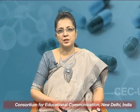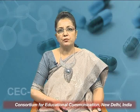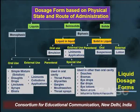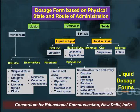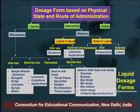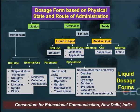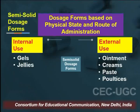The third basis of classification integrates physical state and route of administration collectively — the most realistic and rational type. First, dosage forms are categorized by physical state into liquids, semisolids, and solids. Taking liquids first, they are classified into monophasic and biphasic forms. Monophasic liquids are further classified based on route of administration into oral use, external use, parenteral use, and special use.